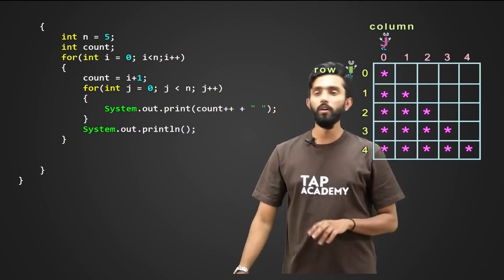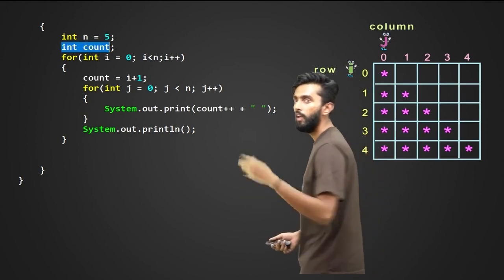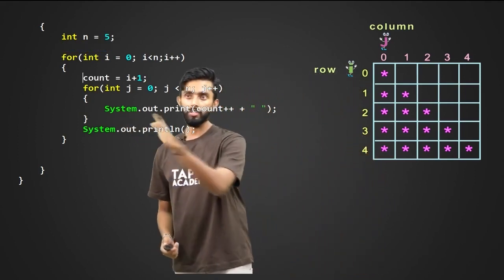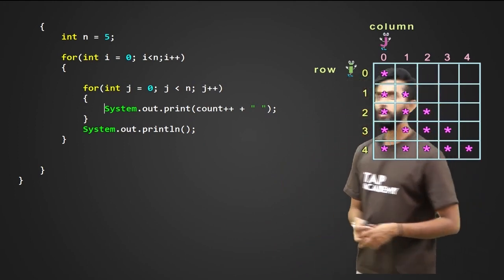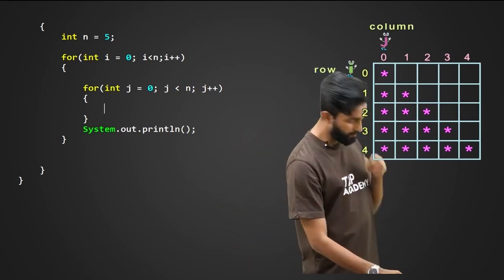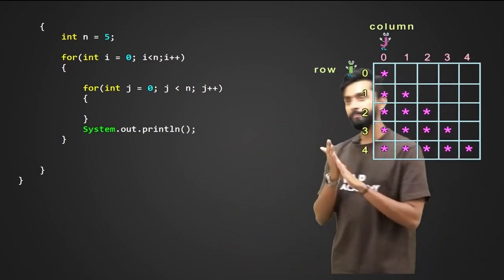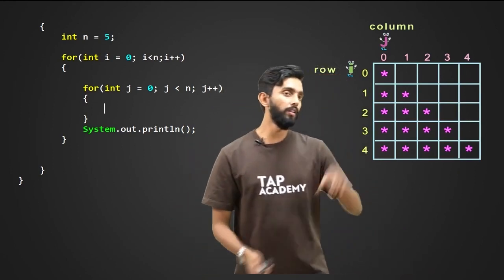So however, here, I will go remove that int count, int count equal to i plus 1. And I will remove the system, that system.out.print also I will remove, all this I will remove. Good, guys. Now, let's start. First of all, look at this.